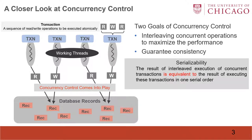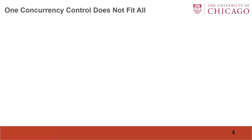One criteria to guarantee consistency is serializability, which says the result of interleaved execution of concurrent transactions is equivalent to the result of executing these transactions in one serial order. In recent years, we have seen many new protocols are proposed, but they are largely optimized for specific scenarios.